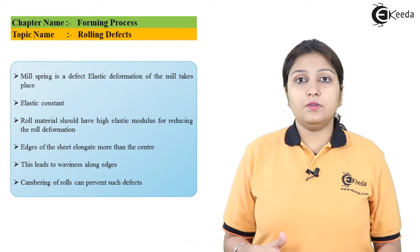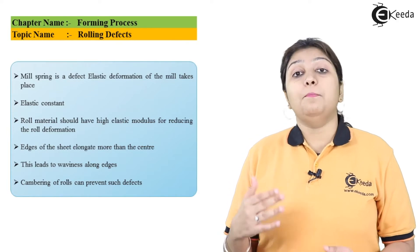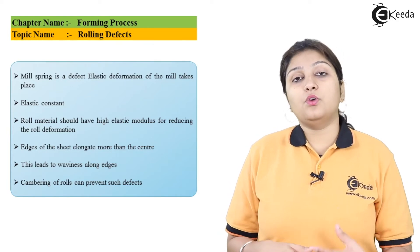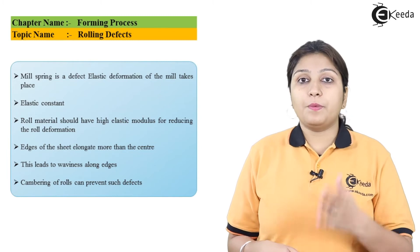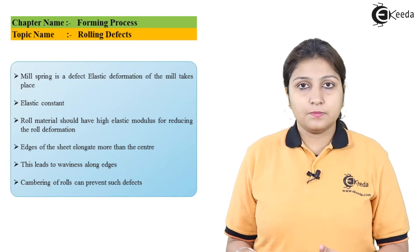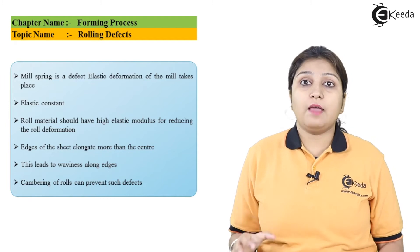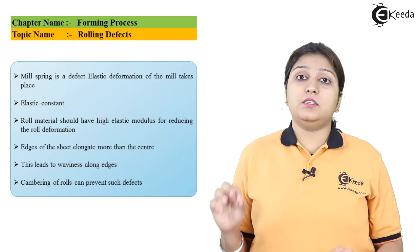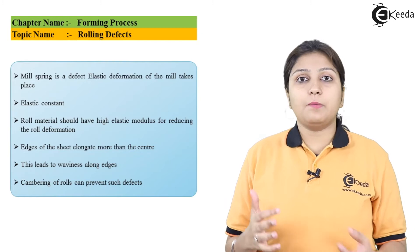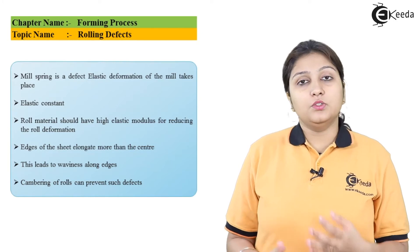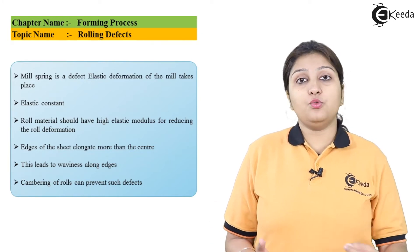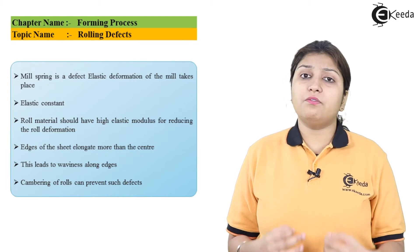The next defect is misalignment. Misalignment generally occurs when your rolls are not in a proper position. For that, you need to check your stands. Your roll material should have a high elastic modulus — it should meet your prescribed requirement — and this plays a very important role if your material to be rolled is very thin.